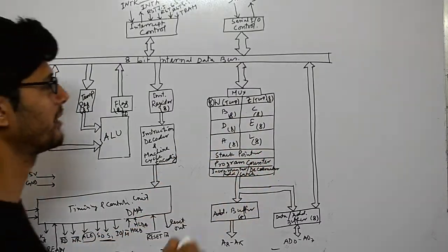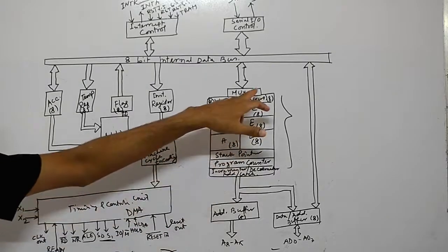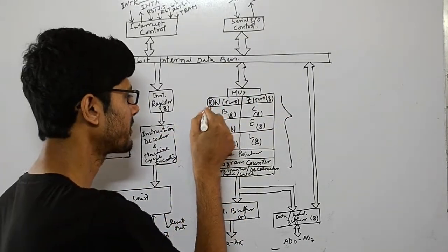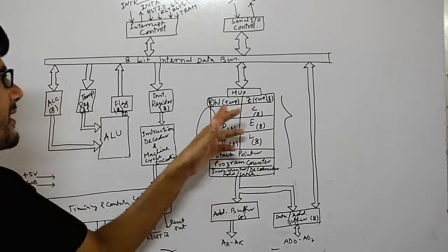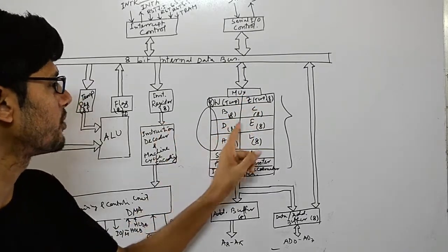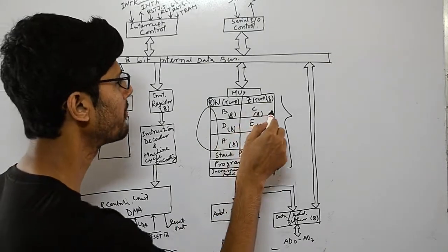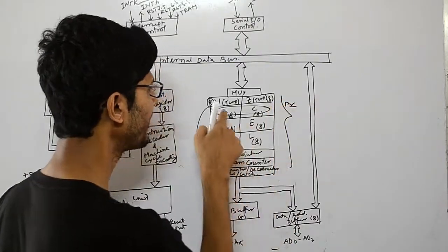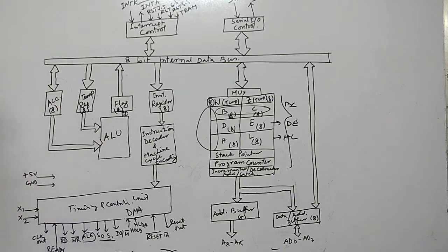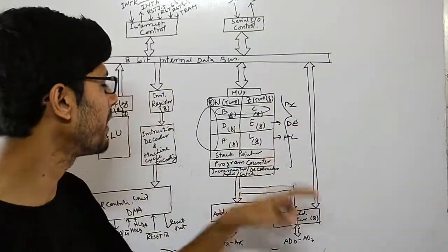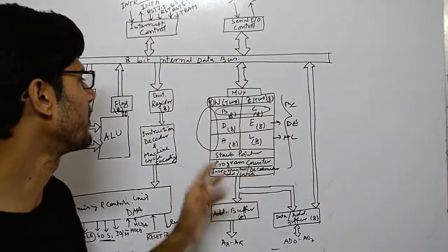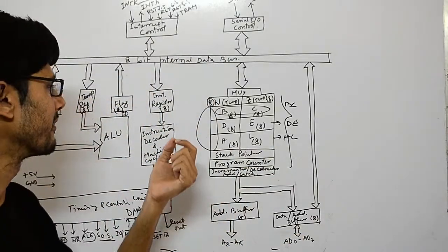The register bank contains general purpose registers B, C, D, E, H, and L — six registers each holding 8 bits of information. There are also temporary registers W and Z. If 16-bit information is required, registers must be paired as BC, DE, or HL pairs — pairing like BD is not allowed by Intel. For 8-bit operations, any of the six individual registers B, C, D, E, H, or L can be used.